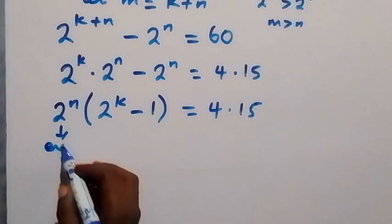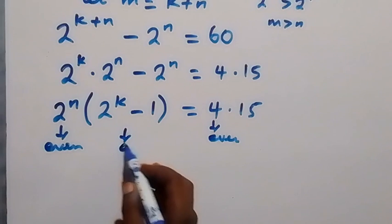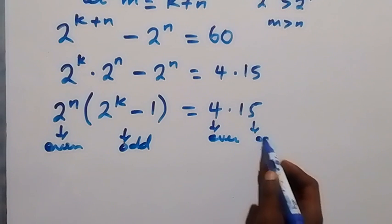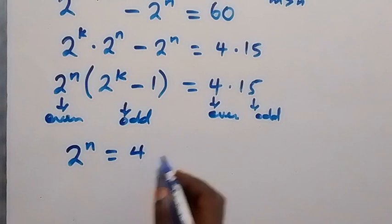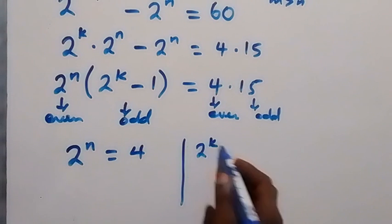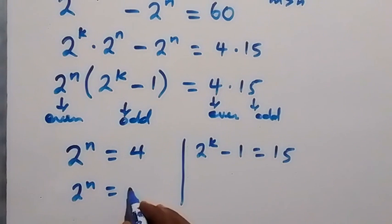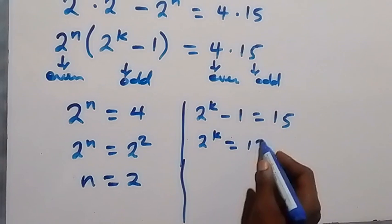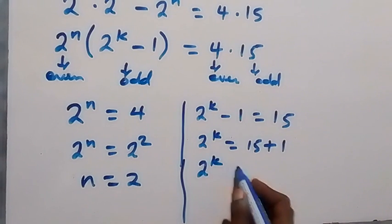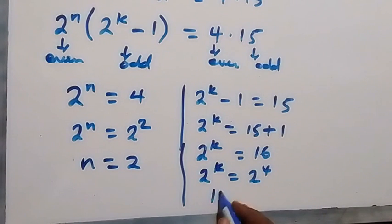Here we observe that 4 is an even number and 15 is an odd number, so we equate the even and odd parts. We get 2 raised to power n equals 4, and 2 raised to power k minus 1 equals 15. From 2^n = 2^2, we get n equals 2. From 2^k = 15 + 1 = 16 = 2^4, we get k equals 4.